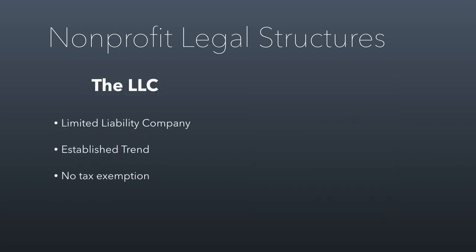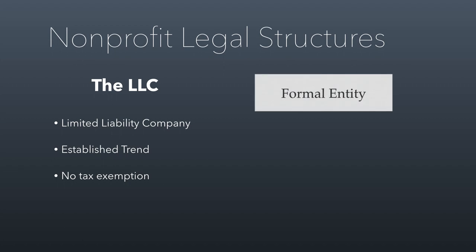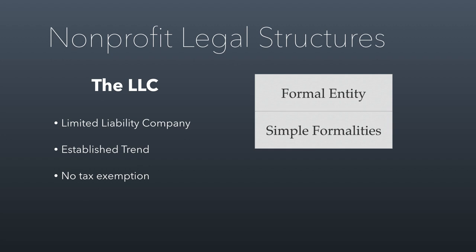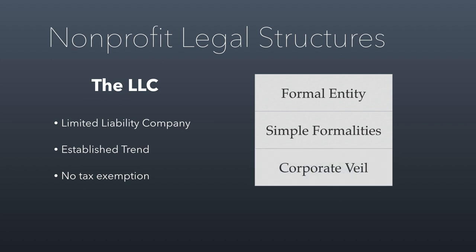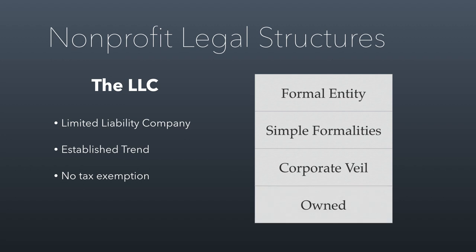LLCs can never be set up with tax exemption because they're always owned. LLCs are like a really lightweight corporation — around since the 1970s, with Wyoming being the first state to create them. They're formal entities that can own property and be sued but have simple formalities; you basically just tell the state you exist, and the state will fill in internal rules if you don't have your own. They benefit from the corporate veil, which is the main reason LLCs are popular, but since they're always owned, they can never get tax-exempt status.